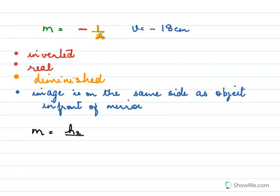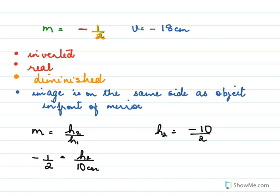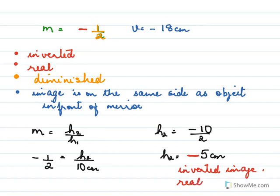Height of image h2 = −5 centimeters. The negative sign is because it is an inverted image. When writing the answer, state height of image = 5 centimeters, inverted. The image and object are both in front of the mirror at their respective distances.